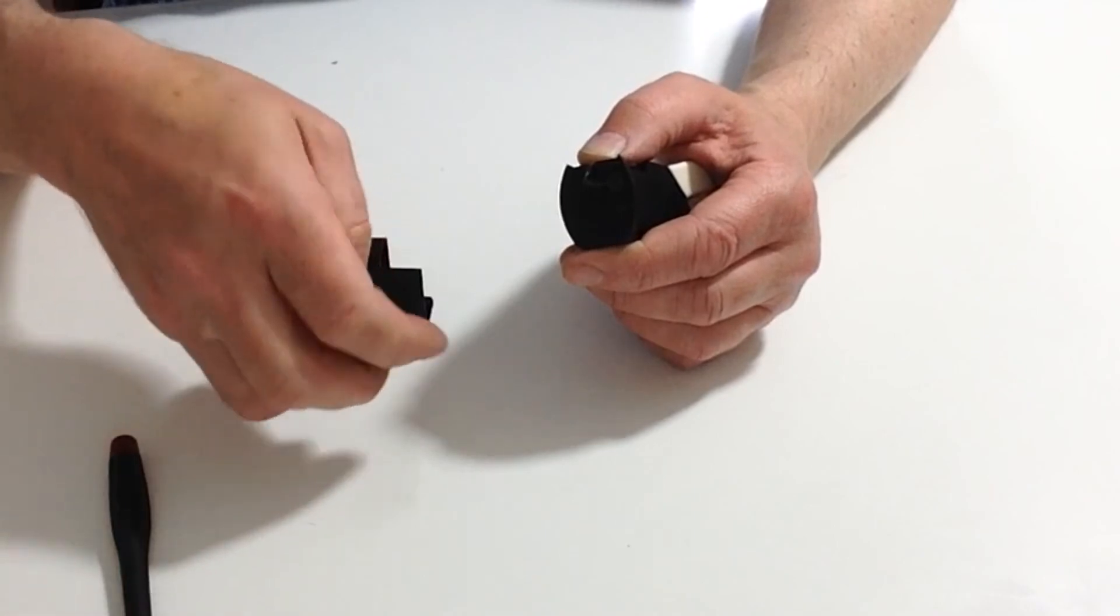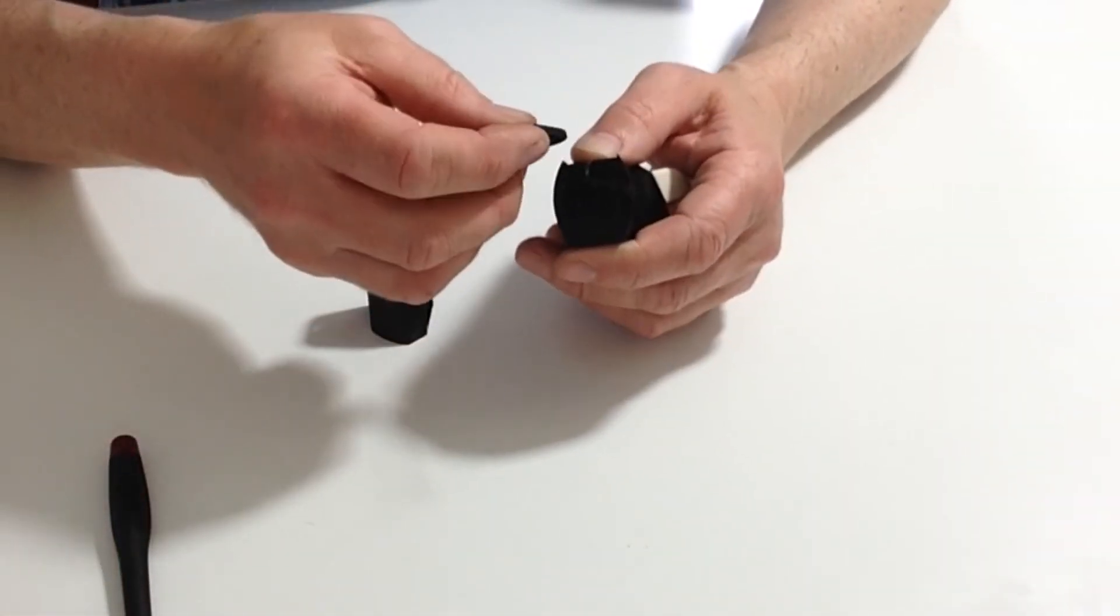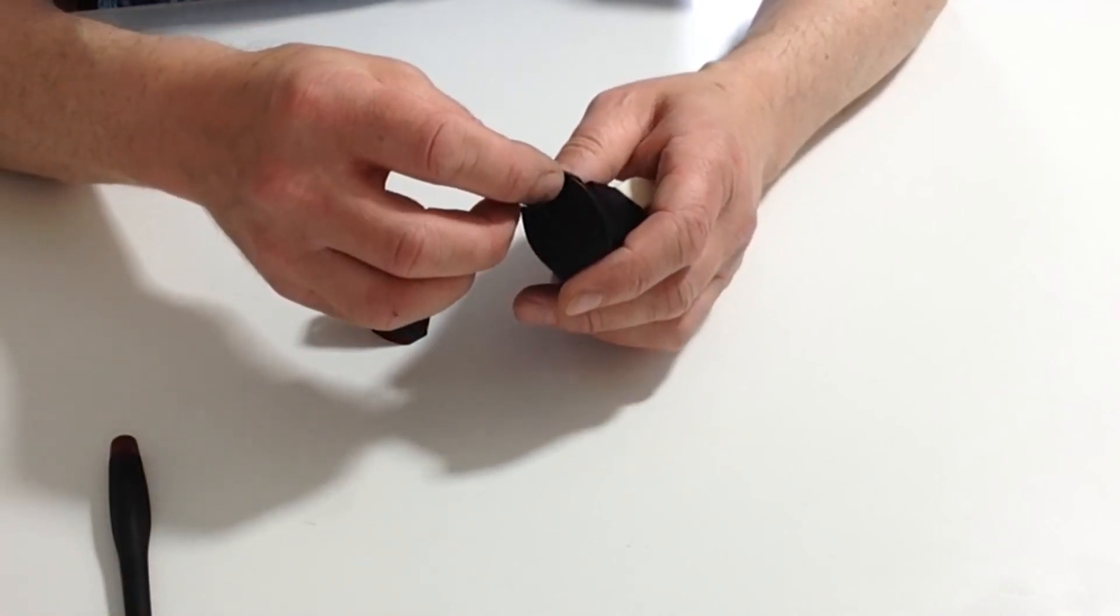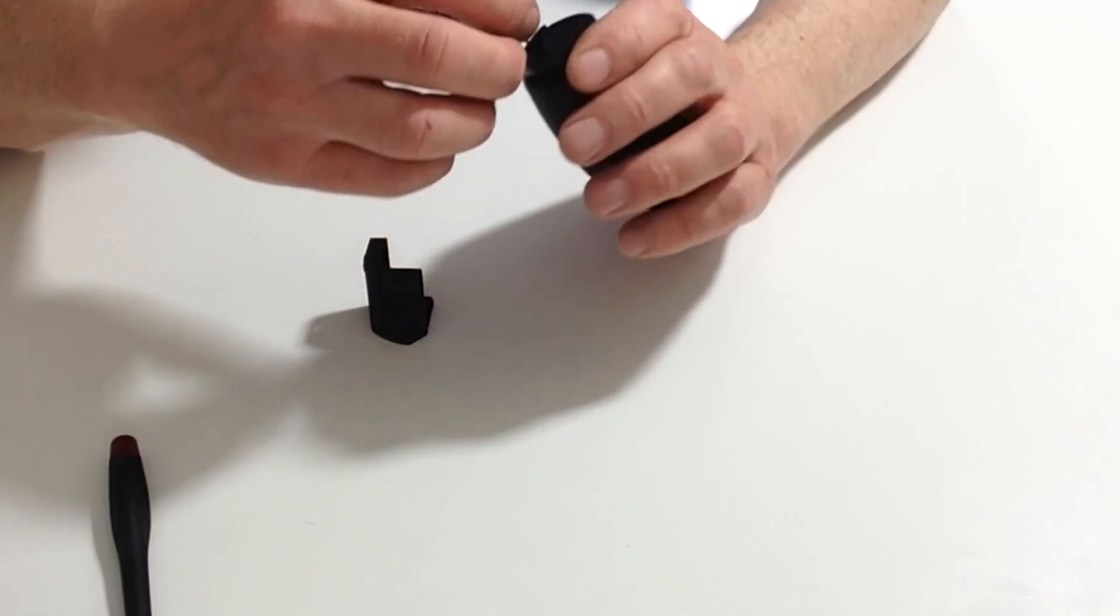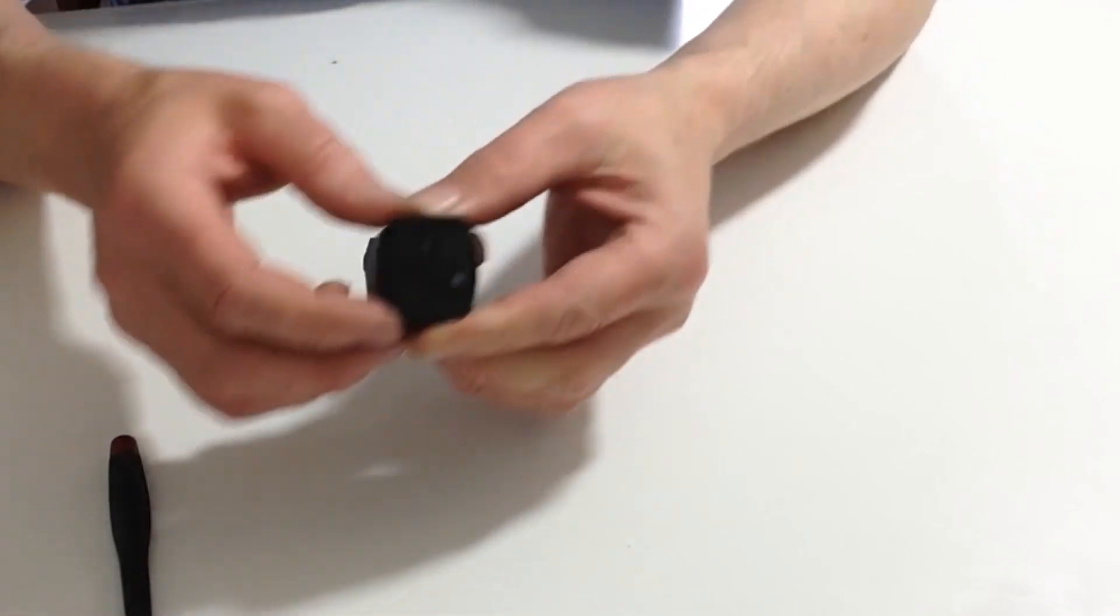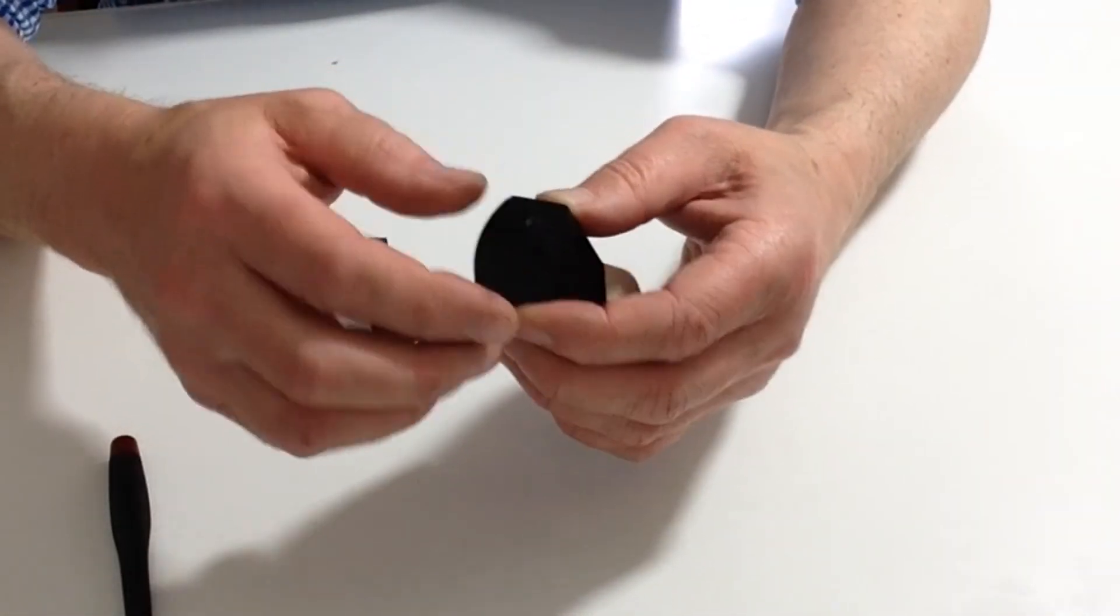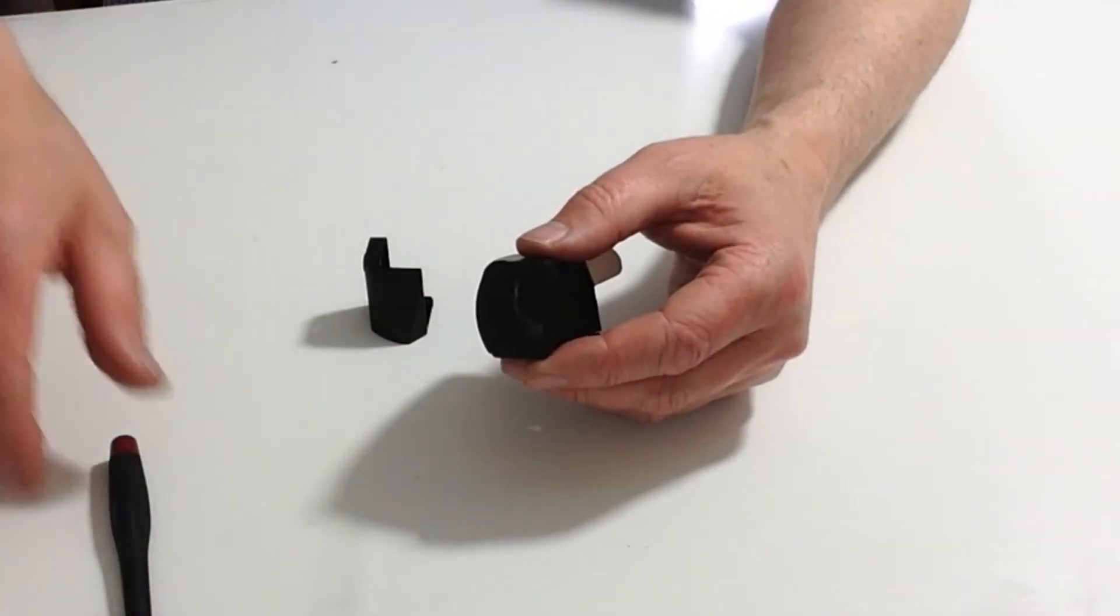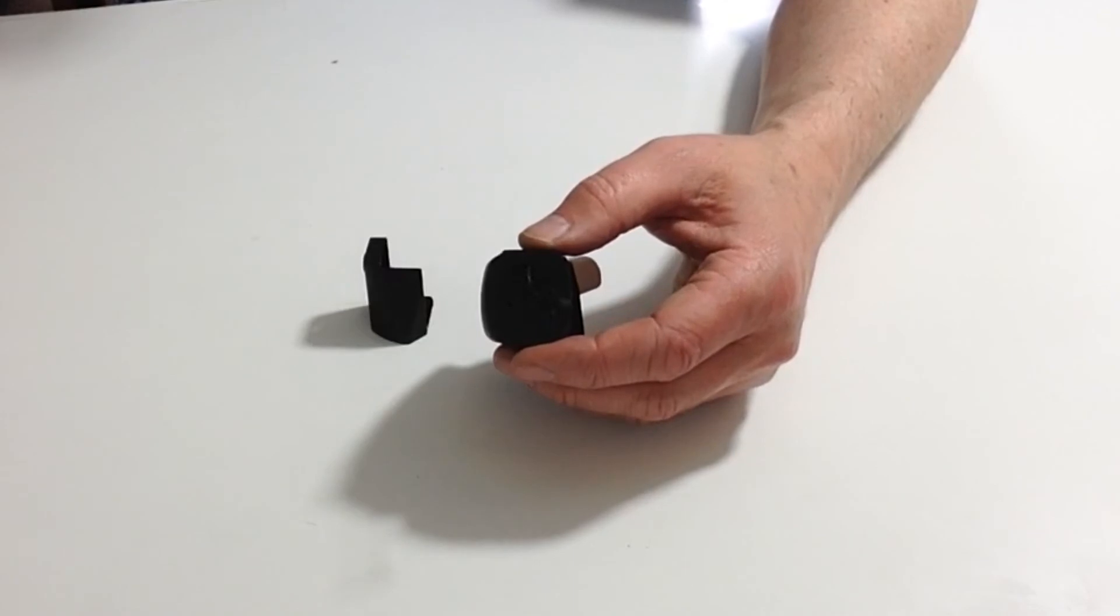Once you've got that, take the plate that came with this stage and place it over the top, making sure that the cable is in between without being crimped. Once you've done that, take two of the 6mm flat heads and screw that down into position.